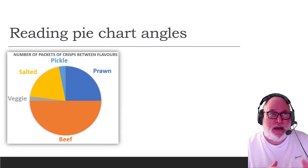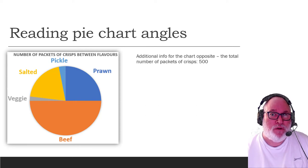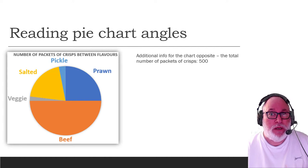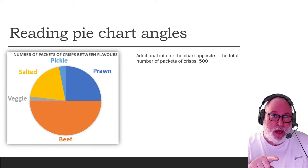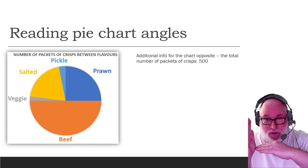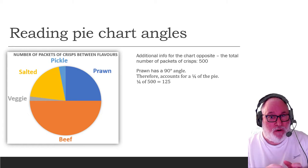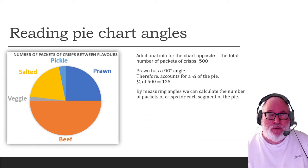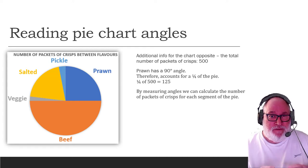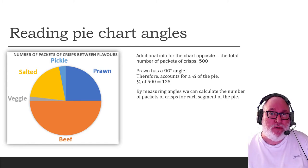And if we then look at a pie chart, we can read this pie chart. So if we were to know the total amount of packets of crisps, for example, we know being told that it's 500. So the prawn, which we actually just measured there using the protractor, is at a right angle, accounts for 90 degrees. So if we get 90 degrees, then we know that's a quarter of the pie. And the pie accounts for 500 total amount of packets of crisps. So a quarter of 500 is 125.